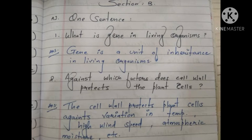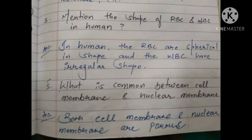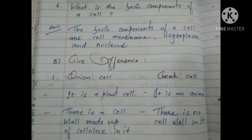Now talking about Section B, answer in one sentence. First: what is a gene in living organisms? A gene is a unit of inheritance in living organisms. Second: against which factors does the cell wall protect plant cells? The cell wall protects plant cells against variation in temperature, high wind speed, atmospheric moisture, etc. Third: the RBC are spherical in shape and WBC have an irregular shape in humans. Fourth: both cell membrane and nuclear membrane are porous. Fifth: the basic components of a cell are cell membrane, cytoplasm, and nucleus.